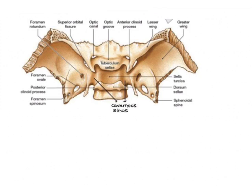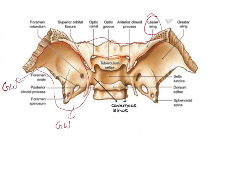If we see the bone as a whole, here you will see the greater wing of your sphenoid and here the lesser wing. The three foramina from anterior to posterior are: R for Rotundum, O for Ovale, and S for Foramen Spinosum. Here you will have your sella turcica, and in these two depressions on either side of it, you will see the cavernous sinus, which is very important.